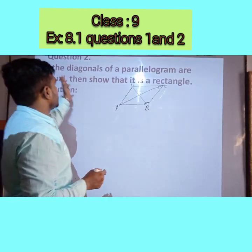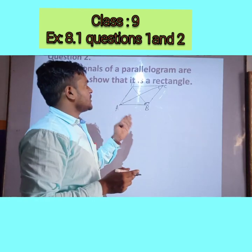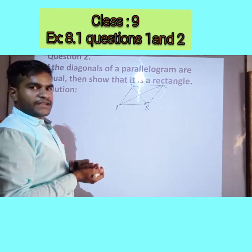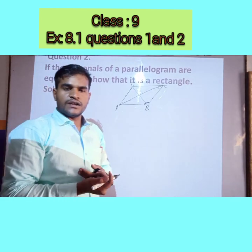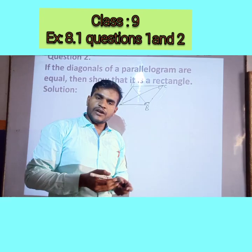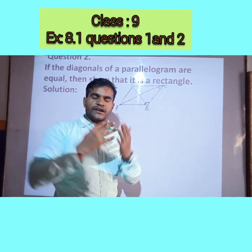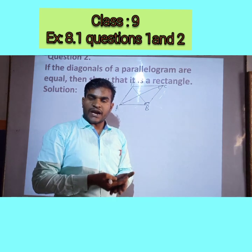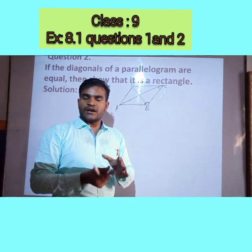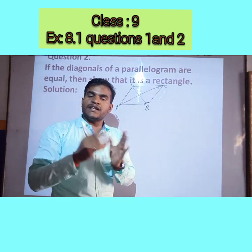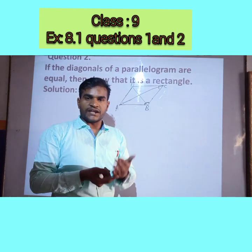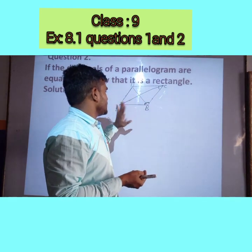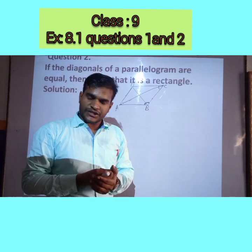Now question 2: if the diagonals of a parallelogram are equal, then show that it is a rectangle. In a rectangle, we know that opposite sides are equal, and in a parallelogram opposite sides are also equal and parallel. But in a rectangle, each angle is 90 degrees — a right angle. So we have to show that angle A, angle B, or angle C are 90 degrees.